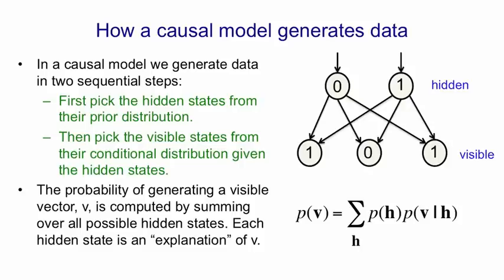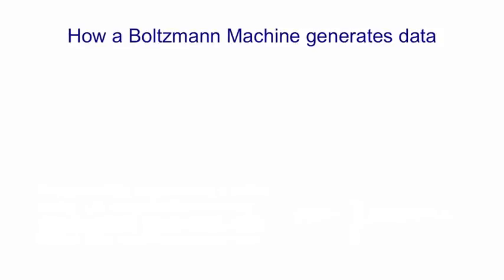But there's a completely different kind of model. A Boltzmann machine is an energy-based model, and in this kind of model, you don't generate data causally. It's not a causal generative model.